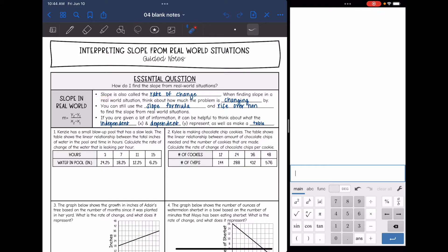Remember slope is also called the rate of change. When finding slope in a real world situation, you want to think about how much the problem is changing by. And you can still use the slope formula and we can also use rise over run if there's a graph to find the slope from real world situations.